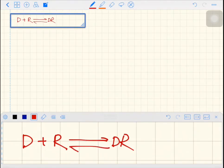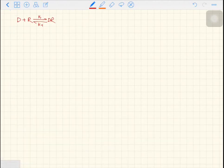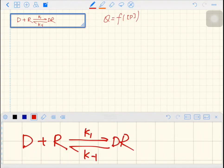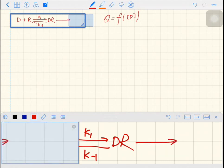Two directions. You have K1 and K-1. These are the rate constants. Remember that the theory we have is that the response is a function of the drug. We assume that when the drug binds with the receptor, it will lead to the response.